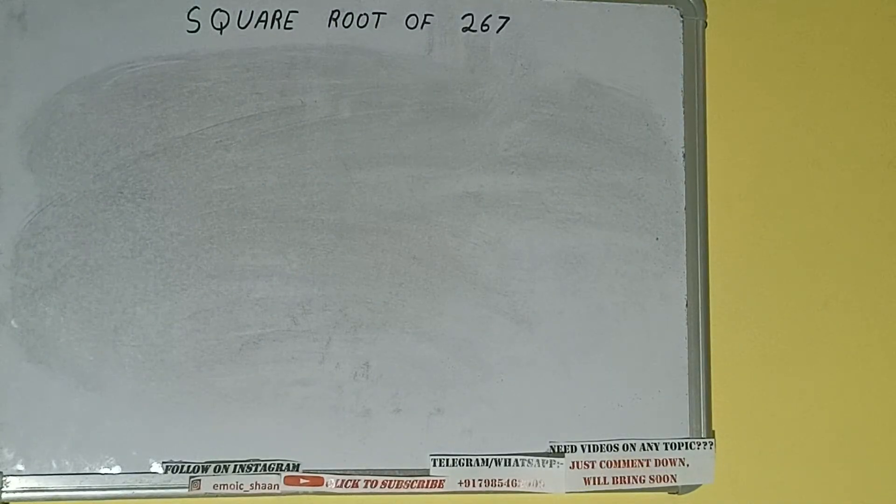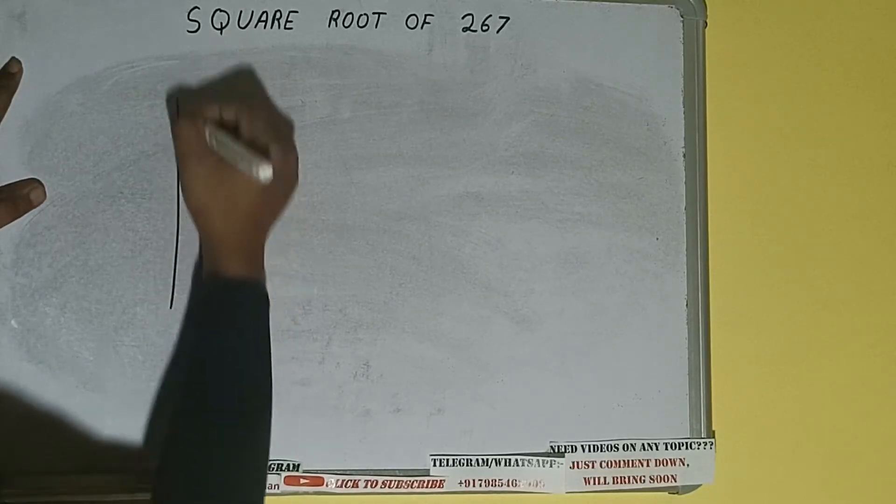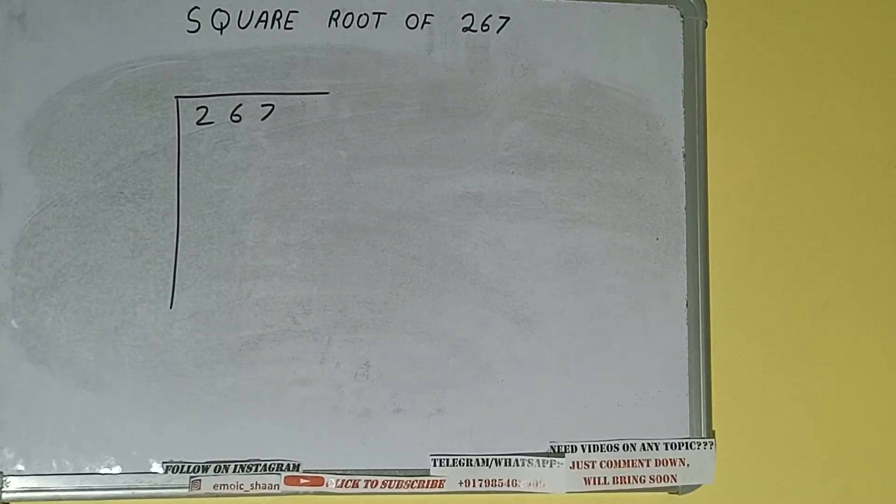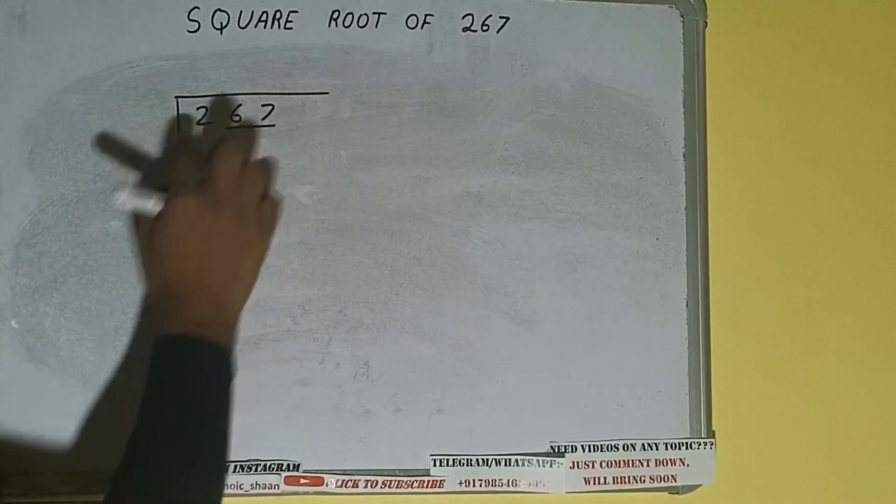Hello friends, in this video I'll be helping you with the square root of the number 267. So let's start. First of all, we need to write the number like this. The next thing we need to do is form pairs from the right-hand side, so one pair will be this and this two will be left out.